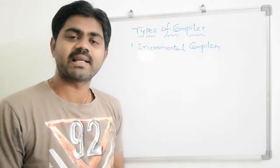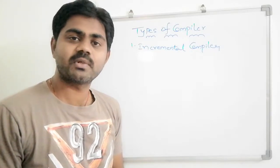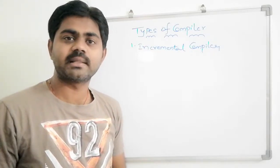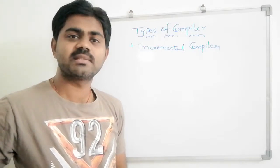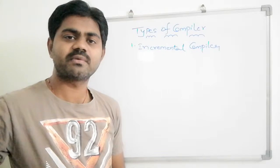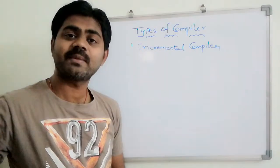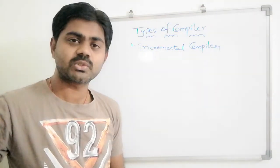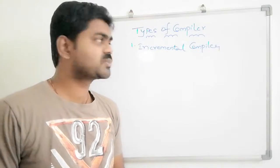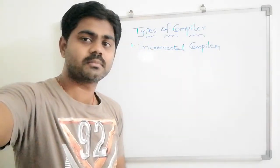Hi friends, welcome to CSCpedia. In the previous class we discussed about phases of a compiler — what are the different phases and how the source program is converted to the target program. Today we are going to discuss about types of compilers, and in that first we'll discuss about incremental compiler.